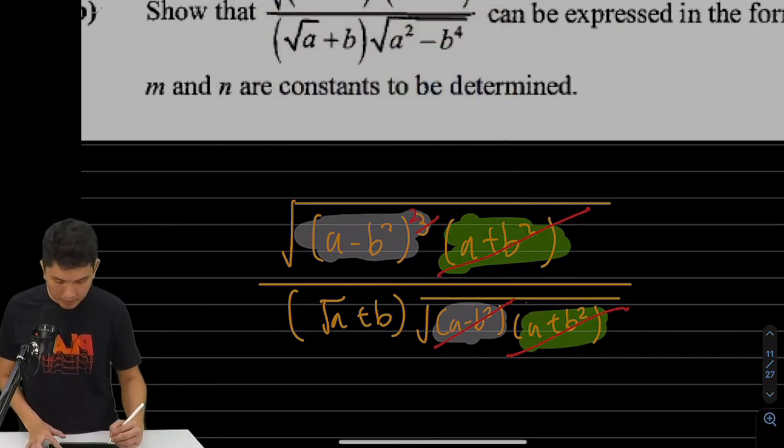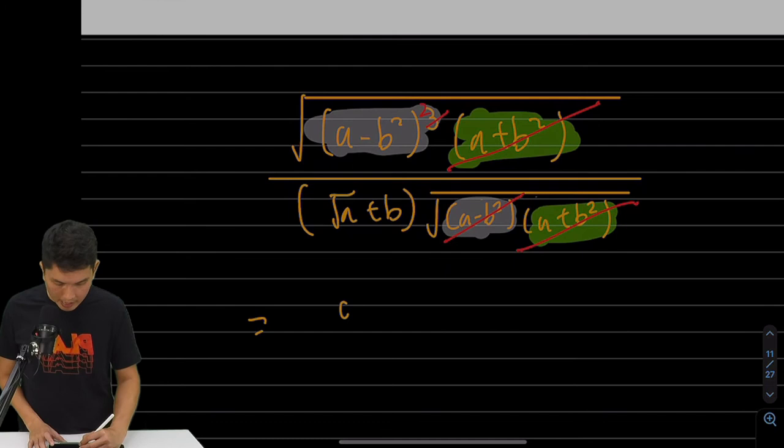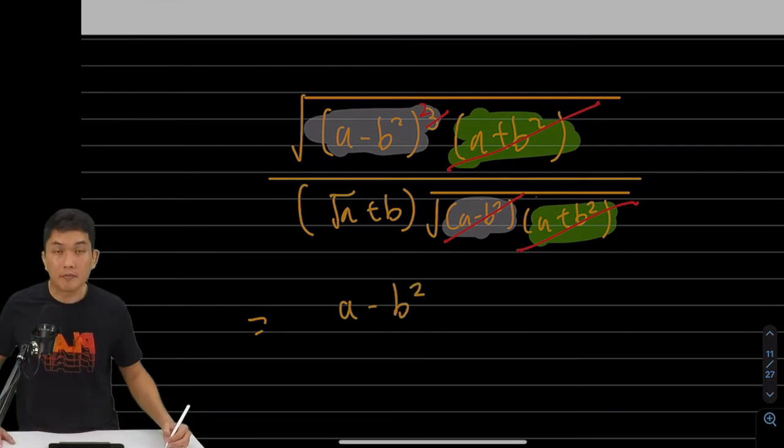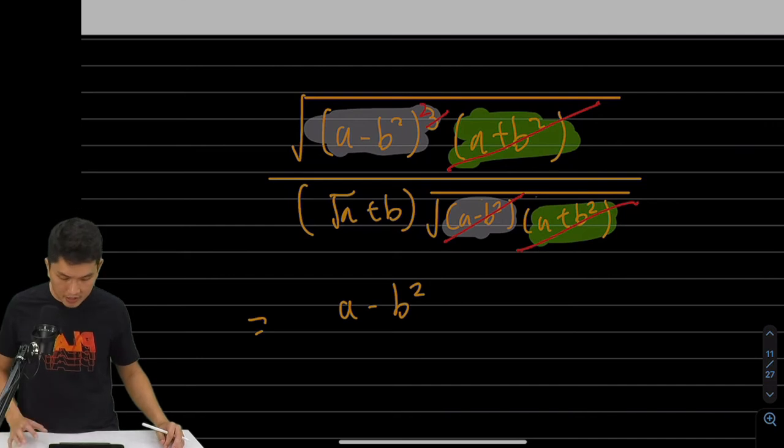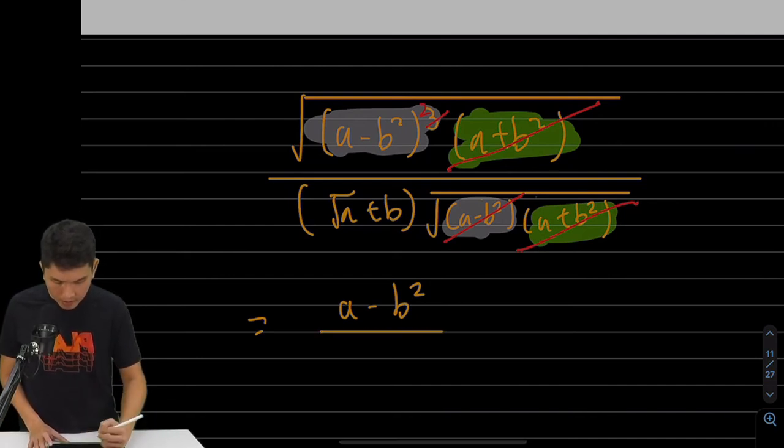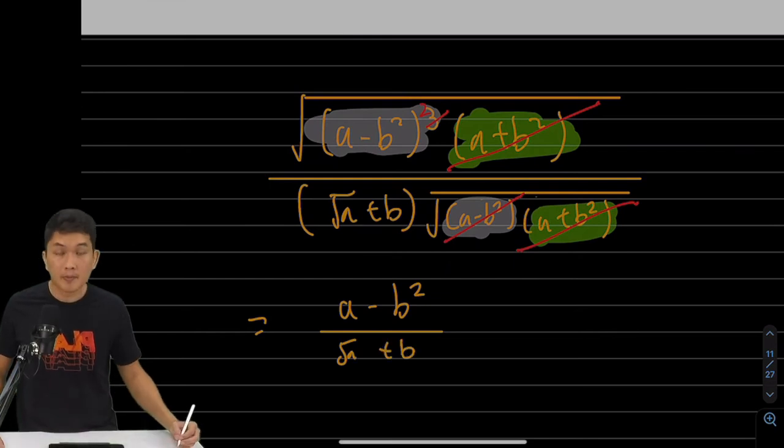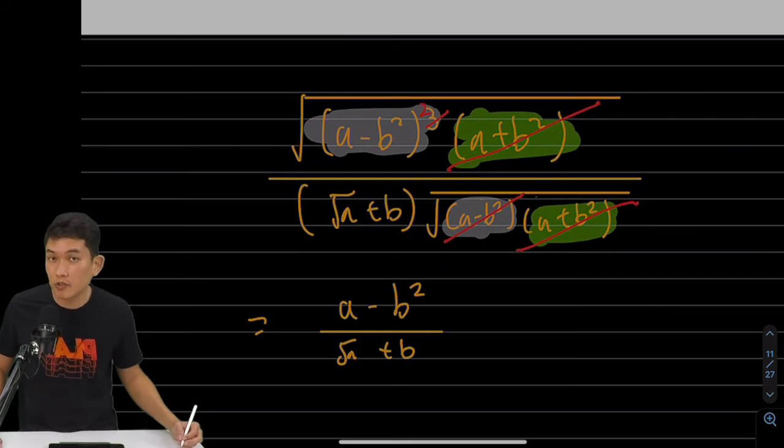So in my next step, I'm just going to have A minus B square in my numerator. Take some time to digest this. There's a lot of cancellation going on. And then the bottom will just be root A plus B. So it's not over yet because we actually have a square root in the denominator.